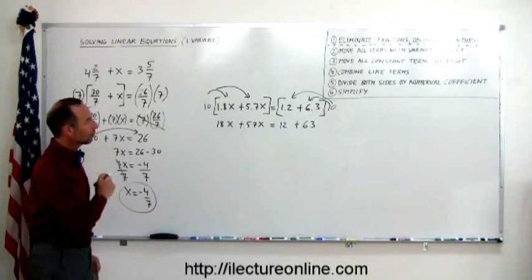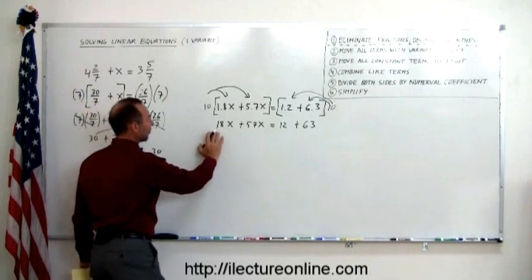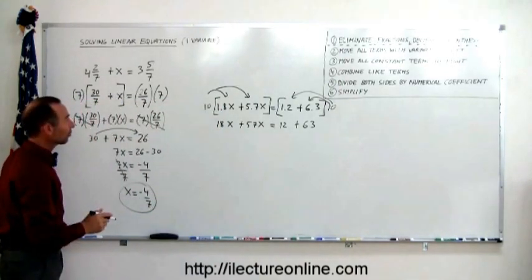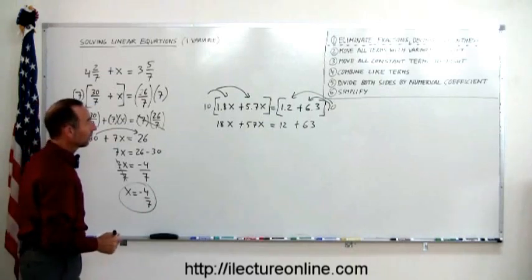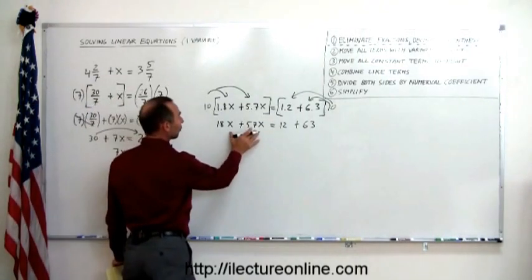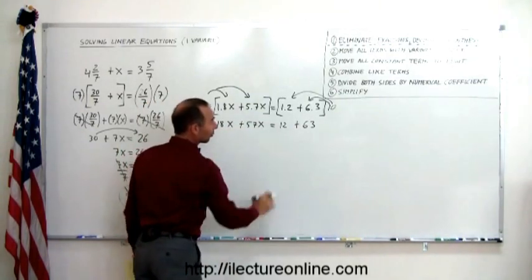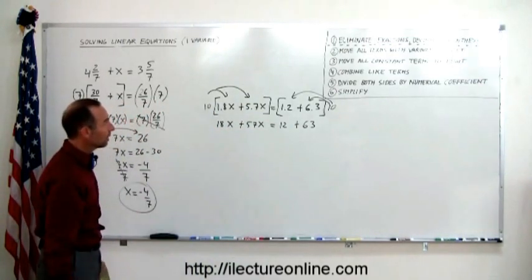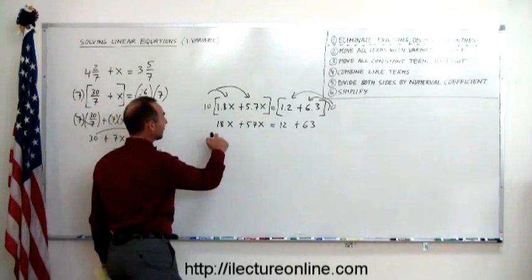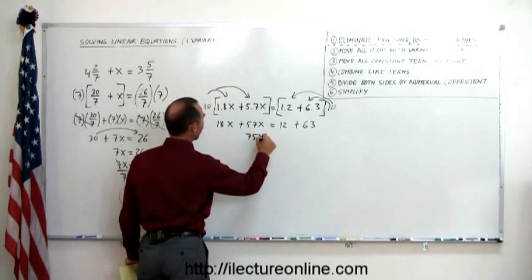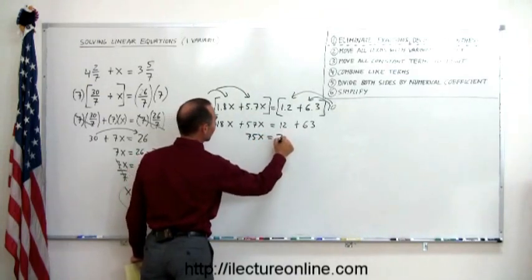Okay. Adding like terms together, because now we have an equation that has no fractions, no decimals, and no parentheses. We don't have any terms with the variable on the right side. They're already all on the left side. We have all the constant terms on the right side, so we can skip step 2 and 3. Combine like terms, step 4, 18 plus 57, that's 75x, equals 12 plus 63 is 75.